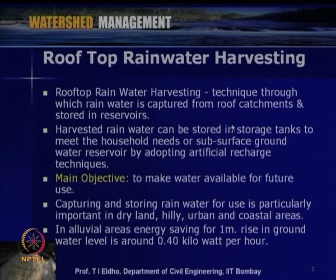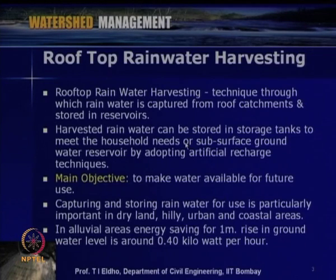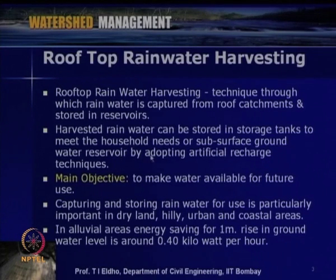Harvested rainwater can be stored in storage tanks to meet household needs directly, especially in dry, arid, semi-arid, coastal, or island regions where water problems exist. Alternatively, we can recharge to the groundwater system by adopting artificial recharge techniques — that is, providing specific structures to increase recharge beyond natural levels.